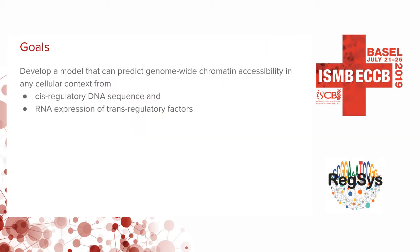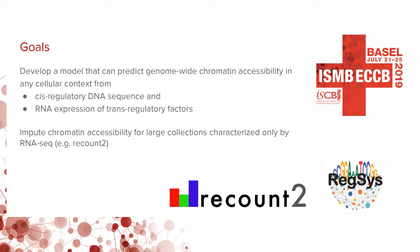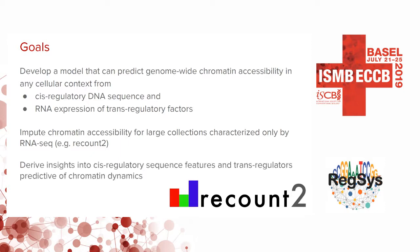The goal of this project was to develop a model that can predict genome-wide chromatin accessibility from two inputs: DNA sequence and RNA expression of trans-regulatory factors. With such a model, we can impute chromatin accessibility for datasets characterized only by RNA-seq, such as RECON2, and derive insights into cis-regulatory sequence features as well as trans-regulatory features predictive of chromatin accessibility.